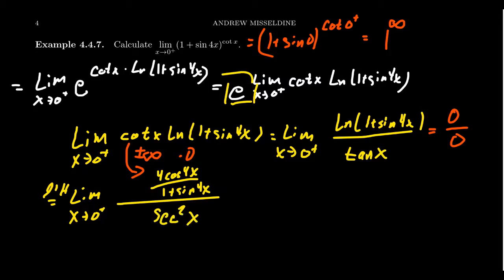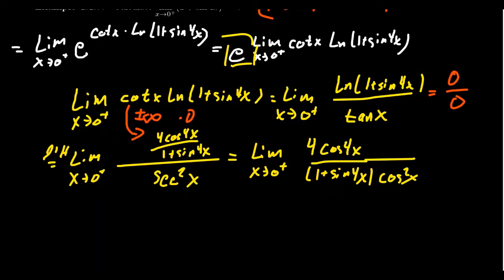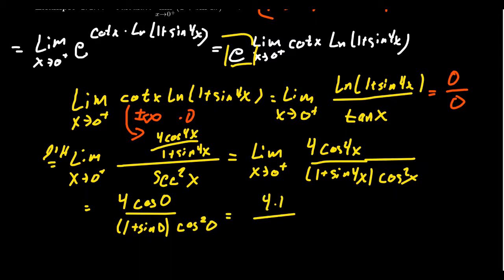Simplifying that fraction: we get 4 cos(4x) over (1 + sin(4x)), and since we're dividing by secant squared — which is 1 over cosine squared — that actually puts cosine squared on top, giving us times cosine squared of x. Taking the limit as x approaches 0: we get 4 times cos(0) = 4 times 1 in the numerator, over (1 + sin(0)) times cos²(0) = 1 times 1 in the denominator. So the inner limit equals 4.